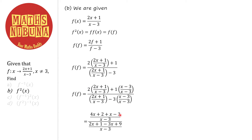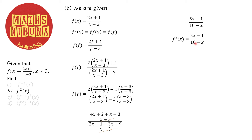Working through the algebra: the numerator becomes 4x+2+(x-3) = 5x-1, and the denominator becomes (2x+1) - 3(x-3) = 2x+1-3x+9 = -x+10. The (x-3) denominators cancel. So f²(x) = (5x-1)/(10-x).